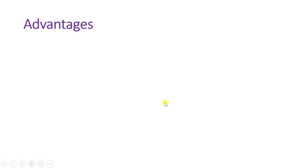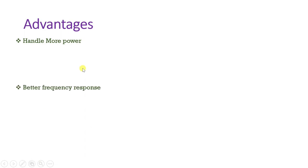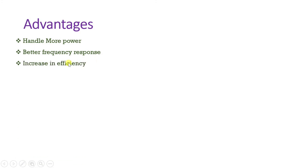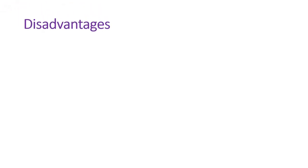Advantages of horn type loudspeaker: it handles more power, has better frequency response, and has increased efficiency. Disadvantages of horn type loudspeaker: its size is large, it is heavy in weight due to the horn, and it is costlier.